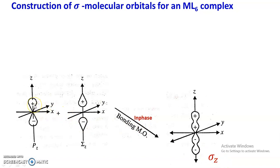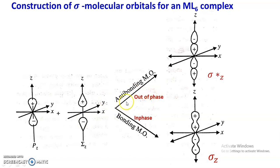Whereas when the positive lobe of the metal ion orbital tries to overlap with the negative lobe of the ligand group orbital, that combination is out-of-phase. Similarly, when the negative lobe of the metal ion orbital tries to overlap with the positive lobe of the ligand group orbital, this is also out-of-phase combination, which results in the formation of an antibonding molecular orbital. By out-of-phase combination we get this type of antibonding molecular orbital. Here you can see the positive lobe of the Pz orbital, that is T1u, trying to overlap with the negative lobe of the ligand group orbital.